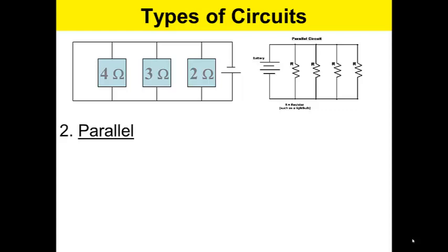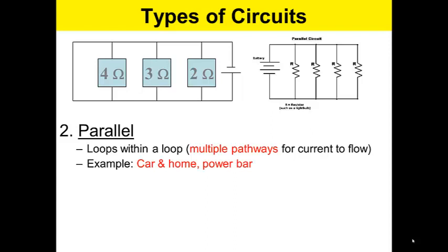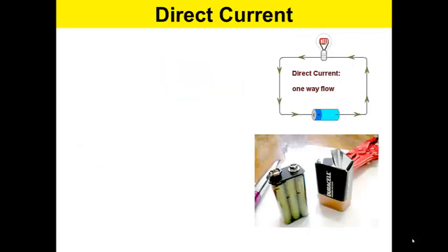The second type of circuit are parallel circuits. These are loops within loops, so there's multiple pathways for current to flow through. Examples of things that have parallel circuits are your car, your home, a power bar. When one goes out, the others still work.